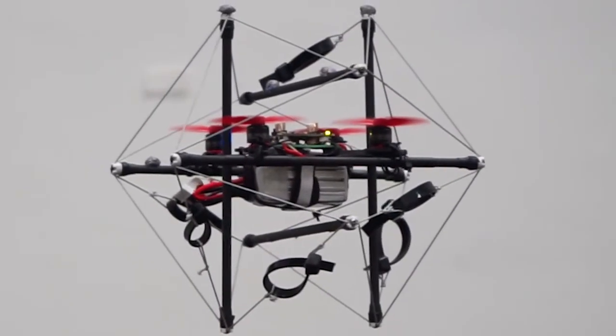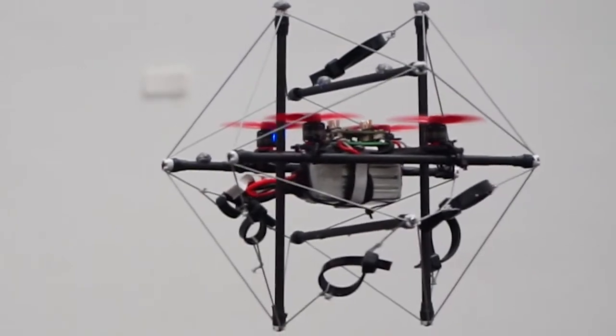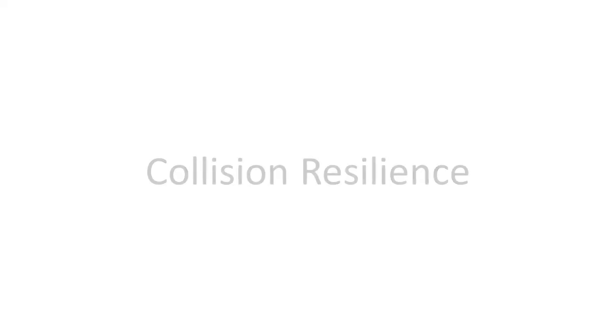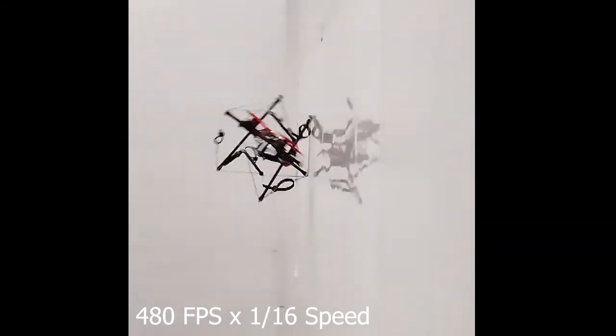We present a collision-resilient aerial vehicle with icosahedron tensegrity structure. The tensegrity structure provides great impact resilience with light weight, and the vehicle can survive collisions with speeds up to 6.5 meters per second.